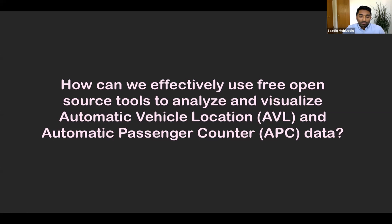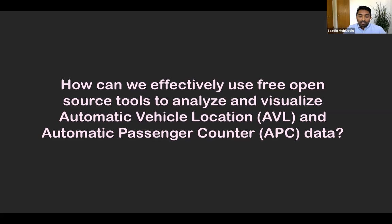In this presentation, I'll discuss an application developed using open source software to examine stop-level performance measures — mainly schedule deviation — and the impacts of a system-wide bus service redesign in Calgary in 2018 and 2019. Using open source software gives us opportunities to create customized, lightweight, adaptable visualizations of stop-level performance measures using data already available to transit agencies such as AVL, APC, and GTFS data. This can help planners understand, visualize, and communicate the performance of routes and how certain interventions impact routes over time.